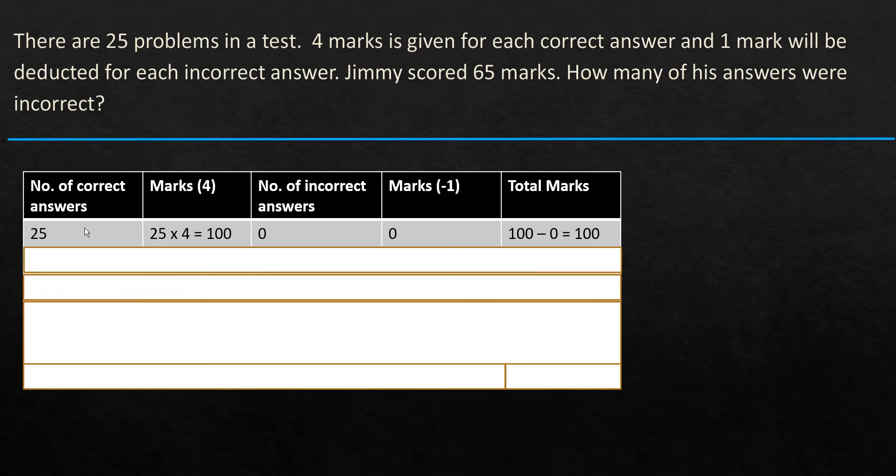So once we have this, let's go ahead and substitute values in there. Number of correct answers—first, we are going to assume that all the answers are correct, so we have 25 here. And the marks obtained is 4 for each correct answer, so 4 times 25, that is equal to 100. Number of incorrect answers, obviously right now it's going to be 0, so we don't have any marks deducted. So the total marks is 100 minus 0 is 100.